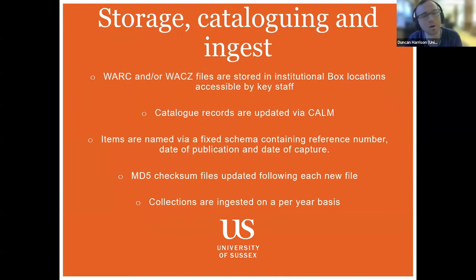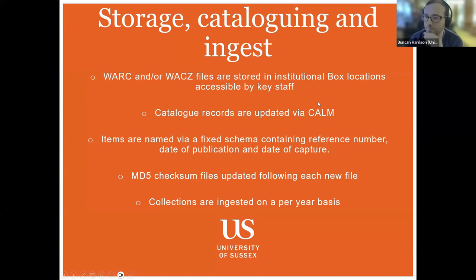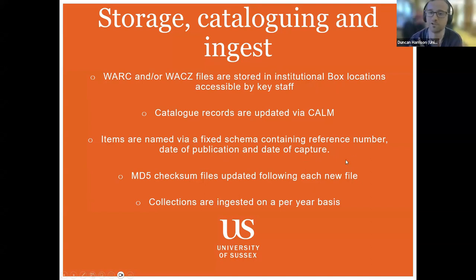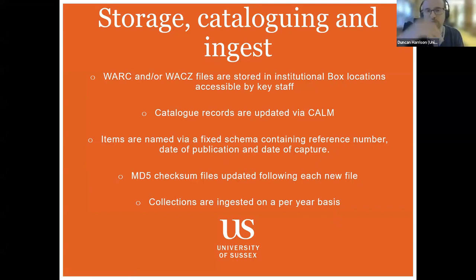Moving on to storage and cataloging: our files are stored in instances of Box managed by the university, and staff who need access can obtain it. Catalog records are updated in Calm each time we do a new crawl. Items are named using a fixed file naming schema containing their reference number and date of publication and capture. We update our checksums every time something new is done, and collections are ingested on a year-to-year basis—each year's newsletters have checksums continuously applied and are ingested once a year's worth is accumulated.